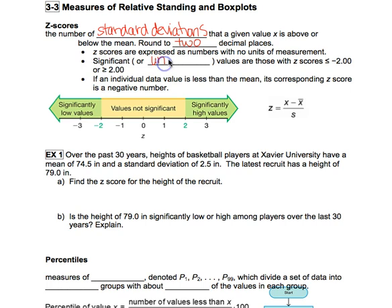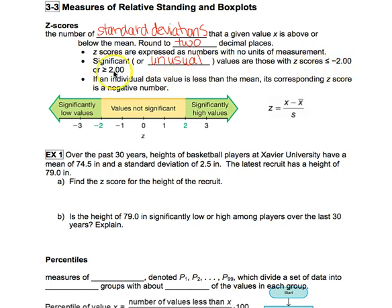Significant — or as we've discussed, the same as saying unusual values or outliers — are values that have a z-score either less than negative two or above positive two. The reason is that a z-score represents standard deviations above or below the mean. If the z-score is below negative two, it's more than two standard deviations below the mean; if it's above positive two, it's more than two standard deviations above the mean. The requirement hasn't changed from the range rule of thumb, just the format we write it in. Negatives represent values below the mean; positives represent values above the mean.